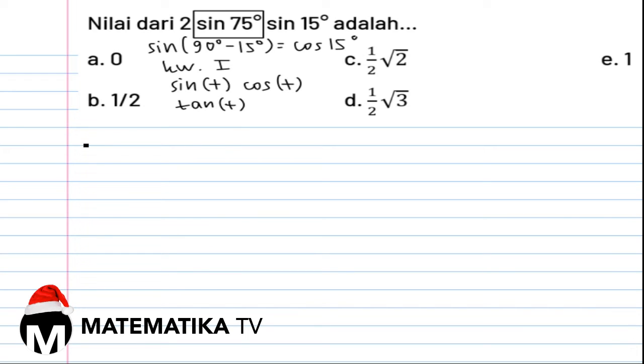Maka bentuk trigonometri dari soal di atas ditulis menjadi 2 sin 15 derajat cos 15 derajat, sama dengan bentuk 2 sin 15 derajat cos 15 derajat adalah sudut rangkap sin.